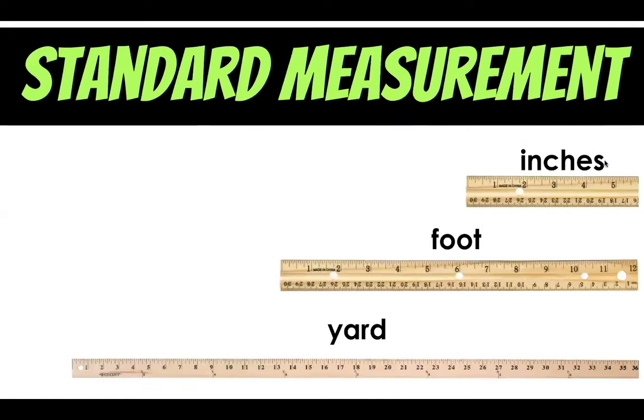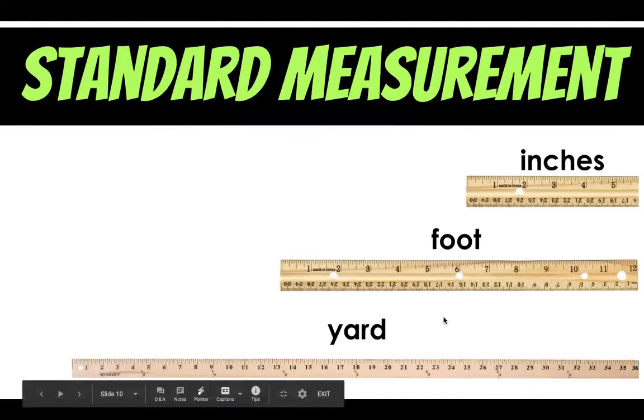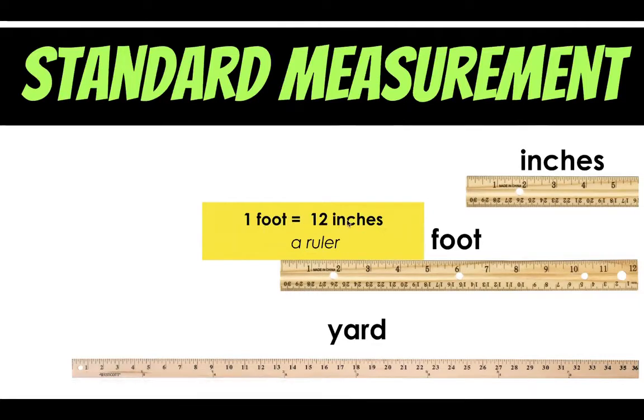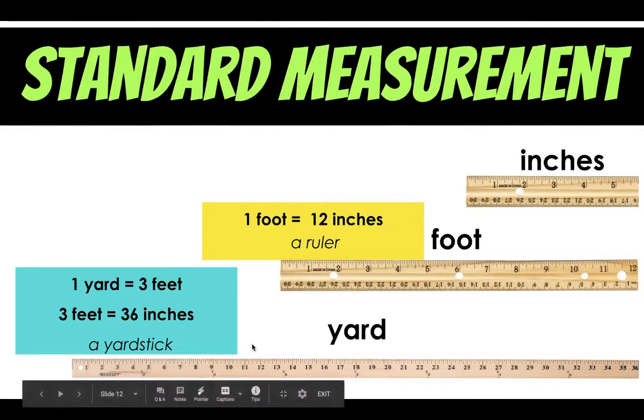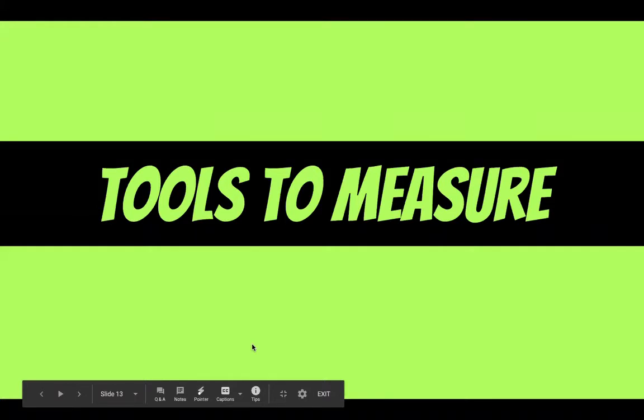So in standard measurement we have inches which are the smallest units. And then we have a foot which is the next biggest unit and then we have yards and we also have miles. One foot equals 12 inches and you know 12 inches is a ruler. A yard equals three feet. So three rulers and three feet equals 36 inches. And this tool right here is a yardstick. Now let's talk about some tools to measure.